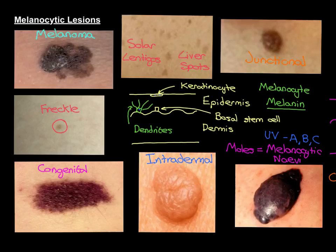The distal tissues that melanoma has an affinity to metastasise to are the lungs, the liver, the bone, and the brain.